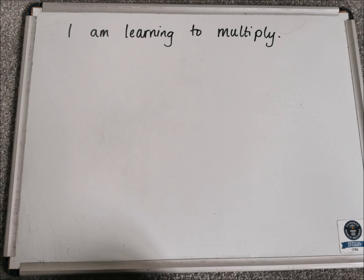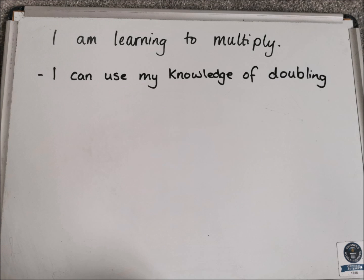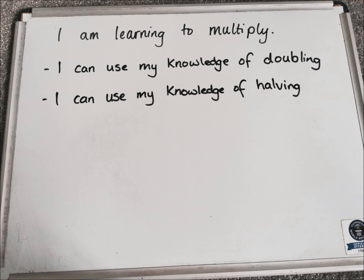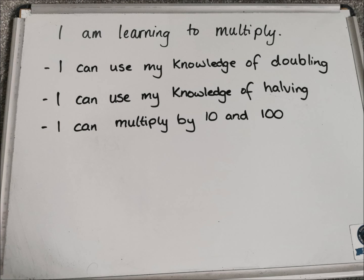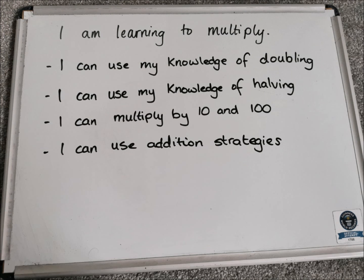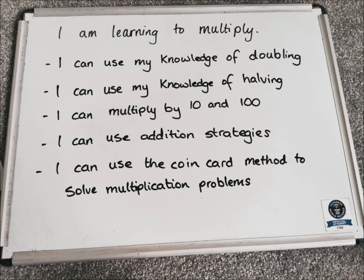Today's learning intention: I am learning to multiply. The skills that we will be using today include our knowledge of doubling, our knowledge of halving, we will be able to multiply by 10 and 100, we'll be using addition strategies, and by the end we'll be able to use a coin card to solve multiplication problems.